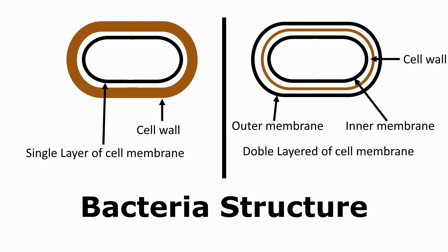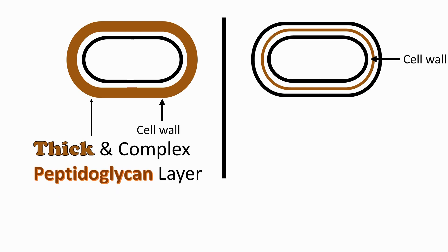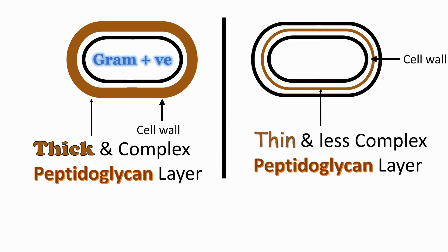That additional layer is the outer membrane. Bacteria with a single layer of plasma membrane and thick cell wall made of complex peptidoglycan are known as gram-positive bacteria, whereas bacteria with a thin cell wall made from less complex peptidoglycan and surrounded by two membranes — outer and inner — are known as gram-negative bacteria.